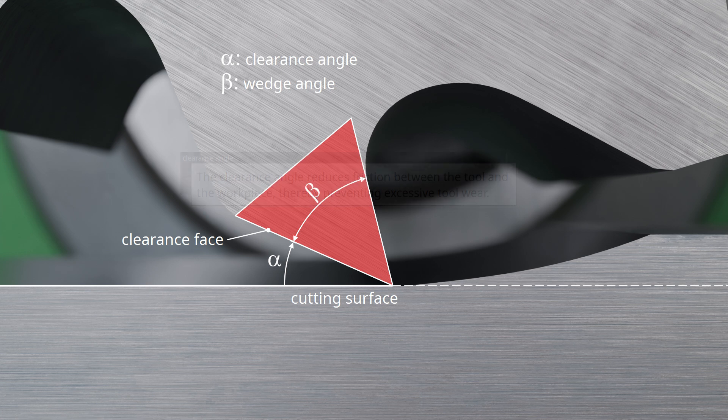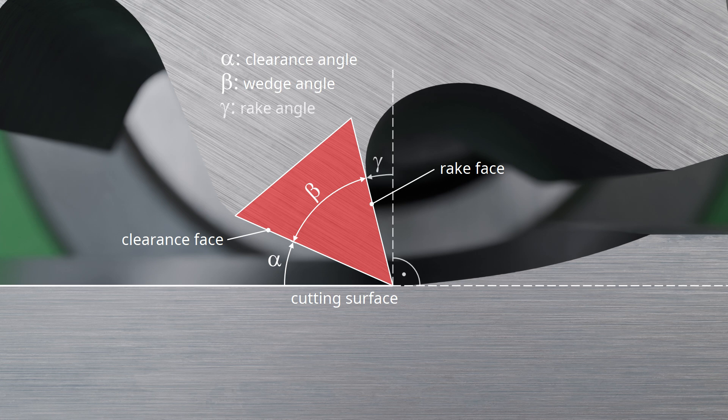The side opposite the clearance face, over which the chip is removed, is called the rake face. The angle between the rake face and the perpendicular to the cutting surface is referred to as the rake angle gamma.